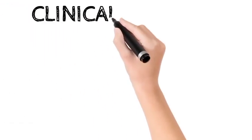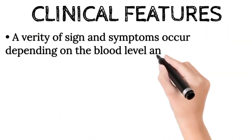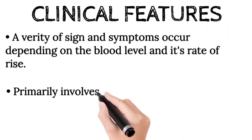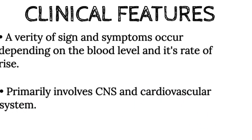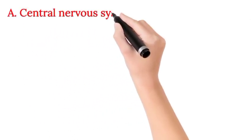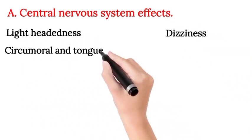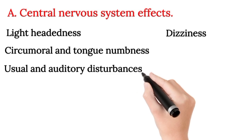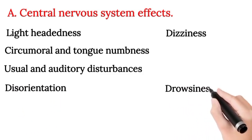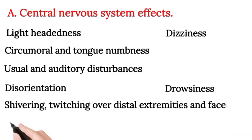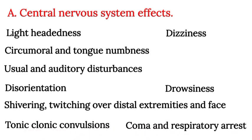Clinical features. A variety of signs and symptoms occur depending on the blood level and its rate of rise, primarily involving the CNS and CVS. Central nervous system effects include: lightheadedness, dizziness, circumoral and tongue numbness, visual and auditory disturbances, disorientation, drowsiness, shivering, twitching over distal extremities and face, tonic-clonic convulsions, coma, and respiratory arrest.